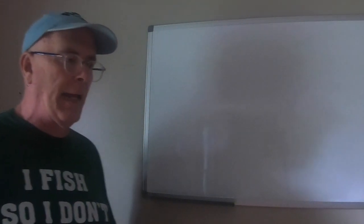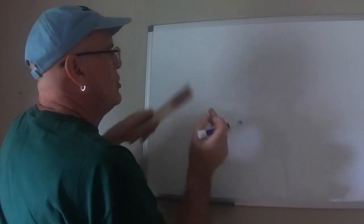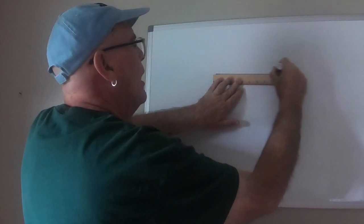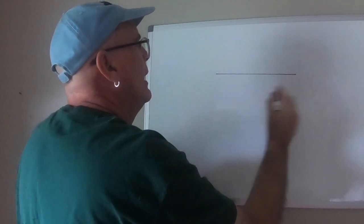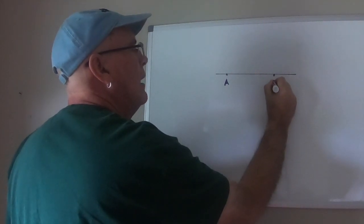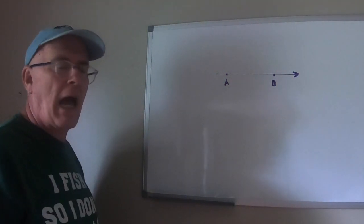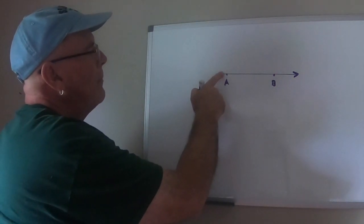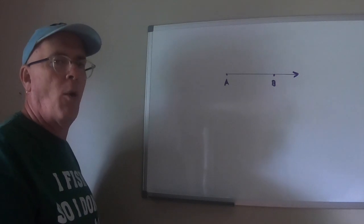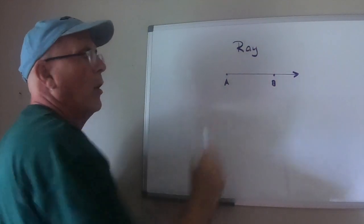Okay, so we talked about line. Now let's talk about what happens if we only look at part of that line. So if I have a line right here and it has a point A and a point B and there's an arrow on only one side. What that means is this has a starting point but no ending point and that is called a ray.